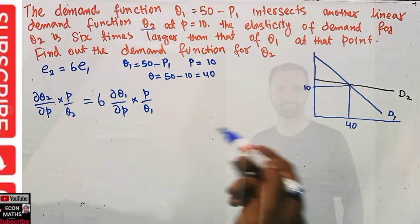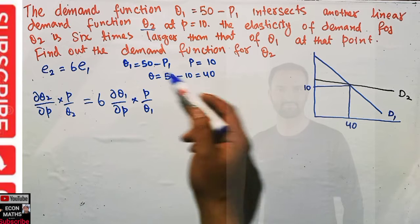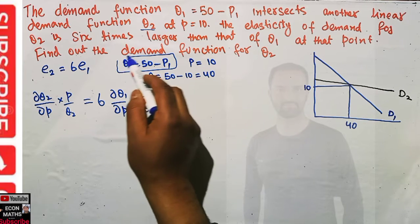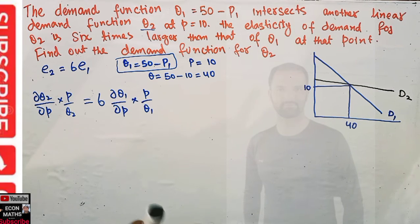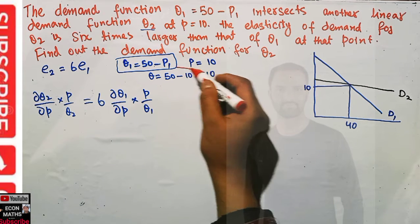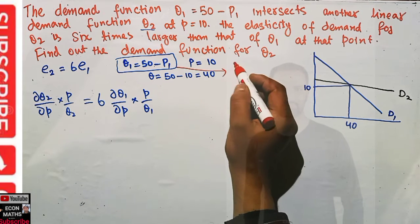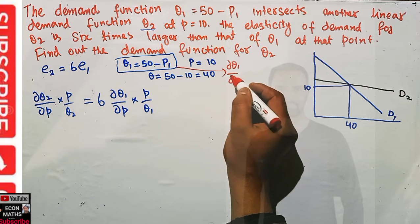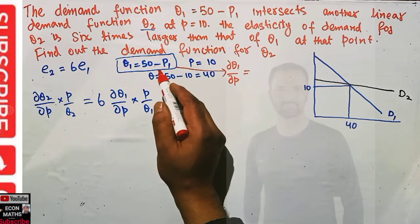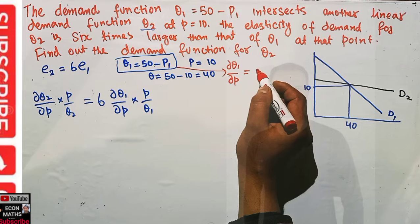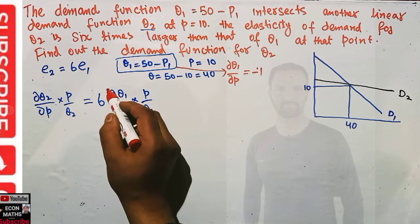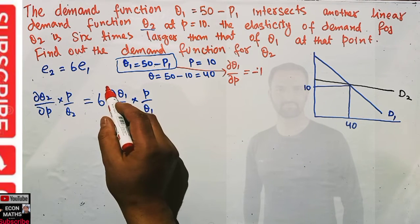What is dq1/dp? We take the derivative of the demand function q1 = 50 minus p with respect to price. The derivative of 50 is zero and the derivative of p is 1, so dq1/dp comes out to be minus 1.